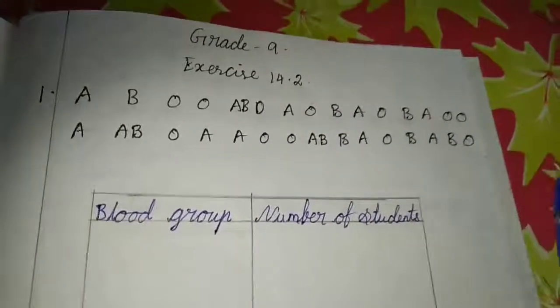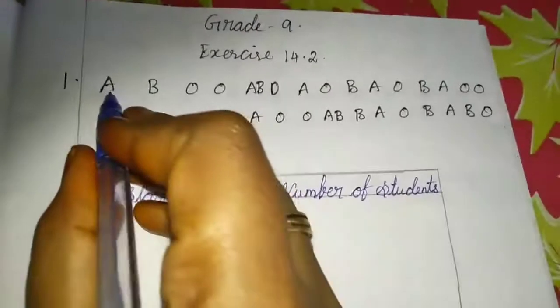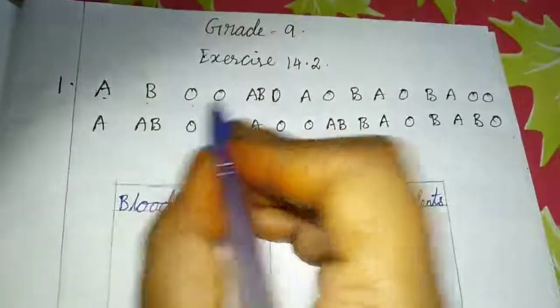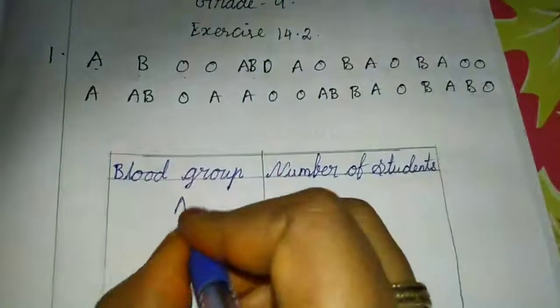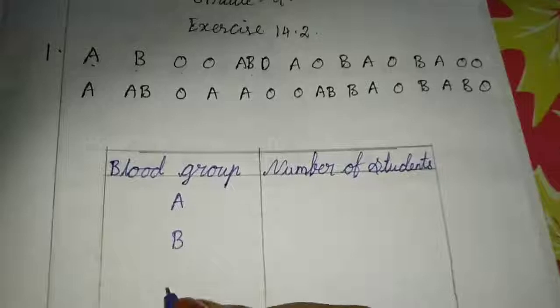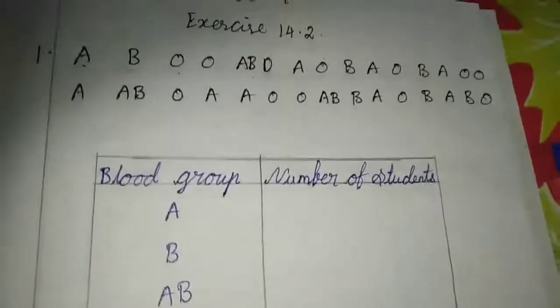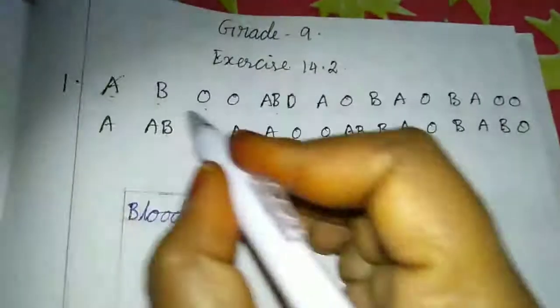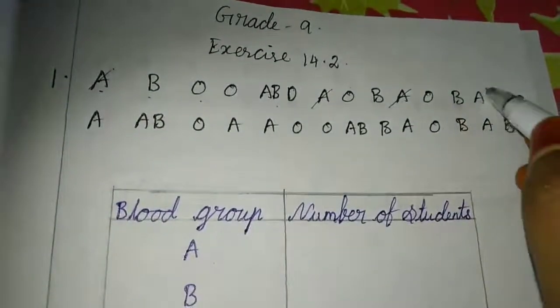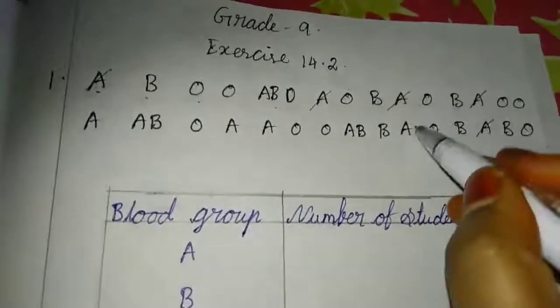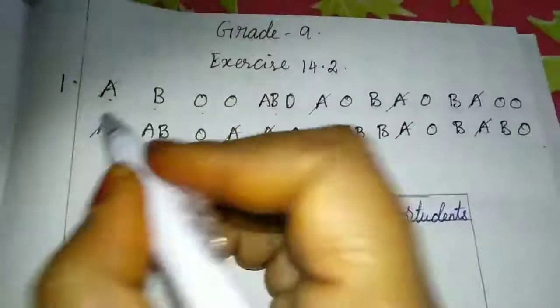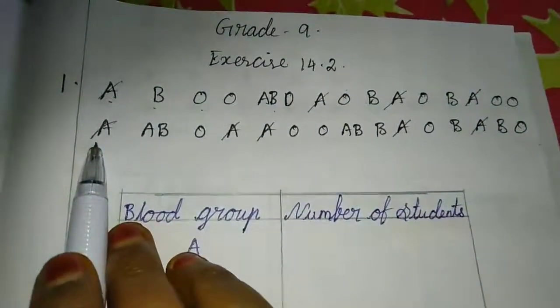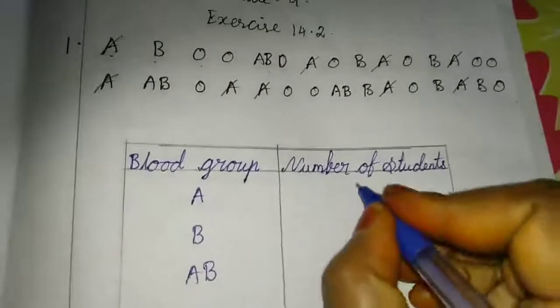See here, I wrote the blood groups: A, B, O, AB. First we will see the A blood group. You have to strike out each one — then only you can keep count correctly. Counting through the data for blood group A: 1, 2, 3, 4, 5, 6, 7, 8, 9. So we have 9 students with blood group A. I wrote 9 here.